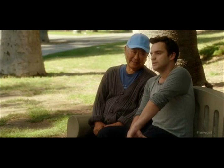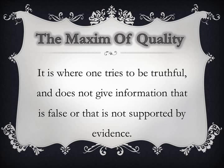The maxim of quality: it is where one tries to be truthful and gives no information that is false or unsupported by evidence — for example, when you tell a lie or when you are not completely honest. Next, we will see a video that shows how this maxim is violated. Rachel and Phoebe are friends, and Rachel has a gift certificate for a spa. But Phoebe didn't want her to receive the massage because she is against massage chains. So Rachel says yes to Phoebe to be polite, but the video shows how Rachel broke her promise and how Phoebe lied.